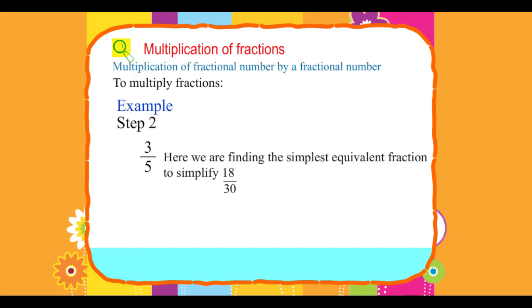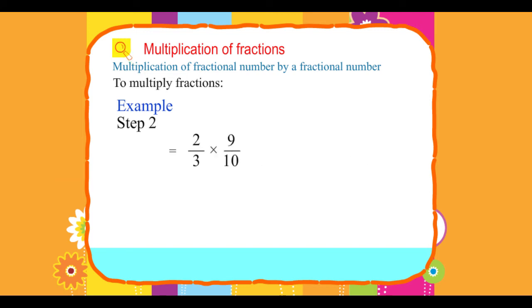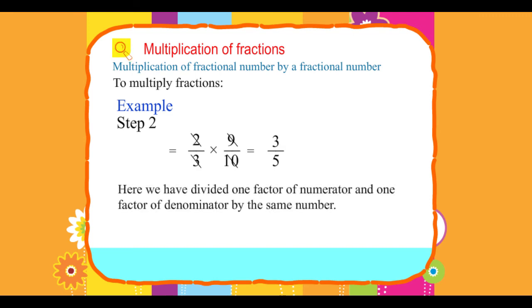Here we are finding the simplest equivalent fraction to simplify 18/30. This simplification can also be done in step 1: 2/3 × 9/10 = (2 × 9) / (3 × 10) = 3/5. Here we have divided one factor of the numerator and one factor of the denominator by the same number.